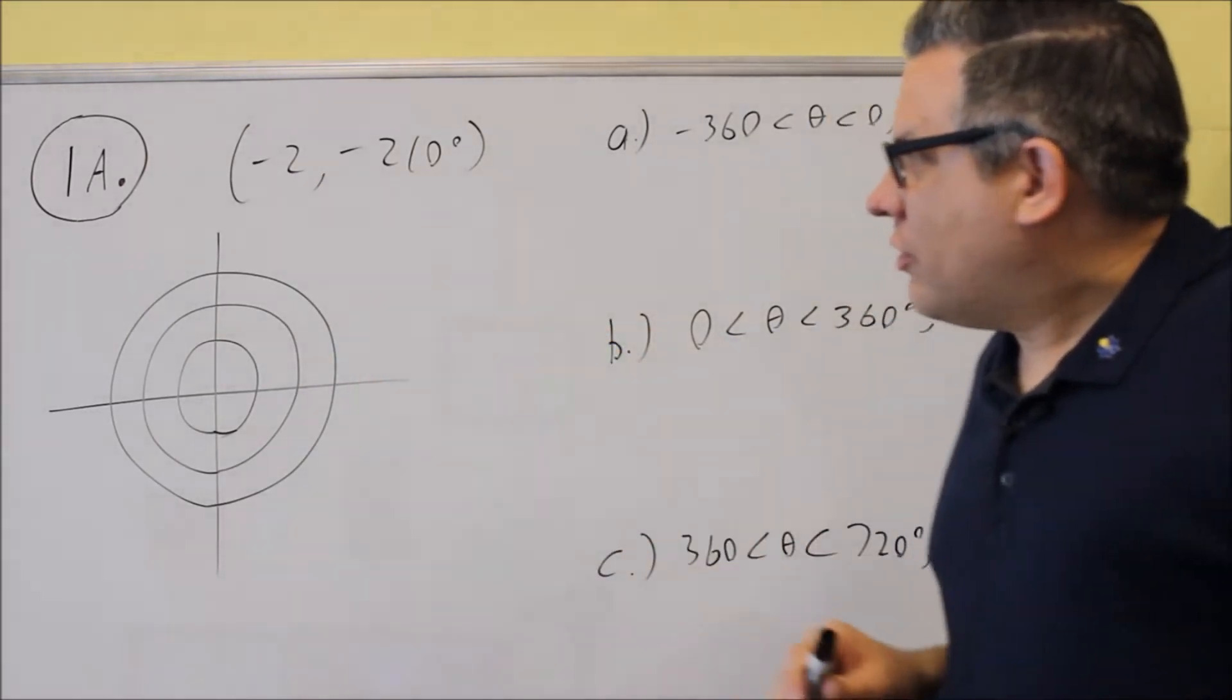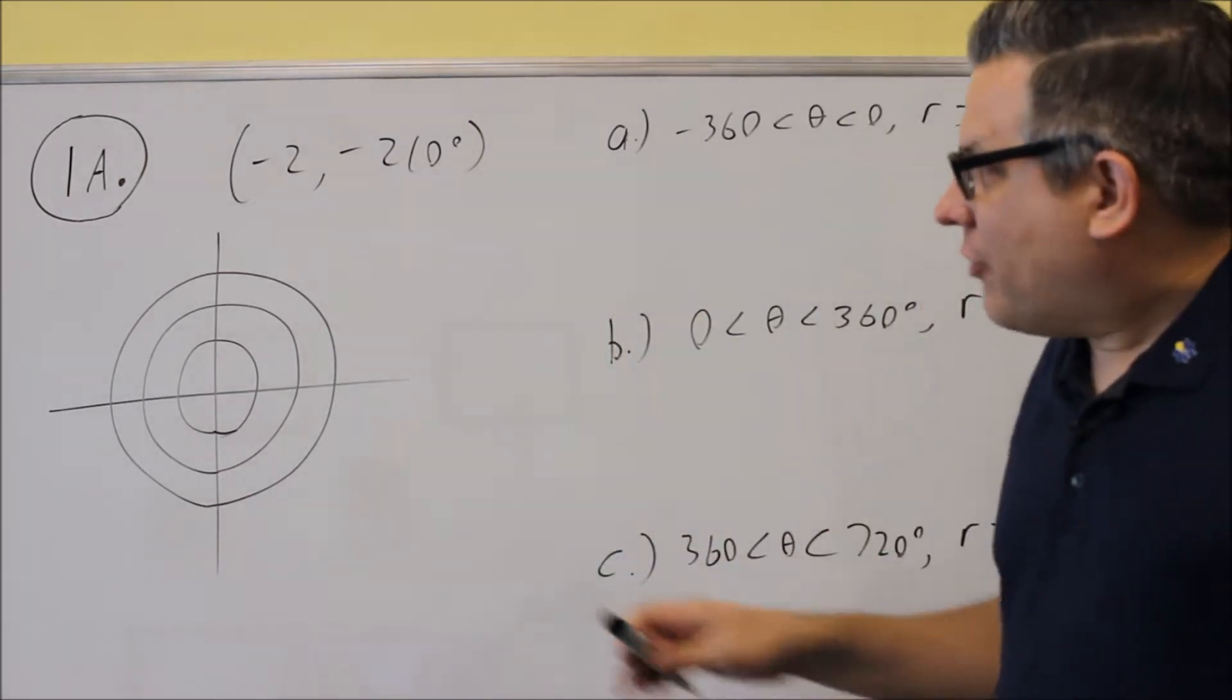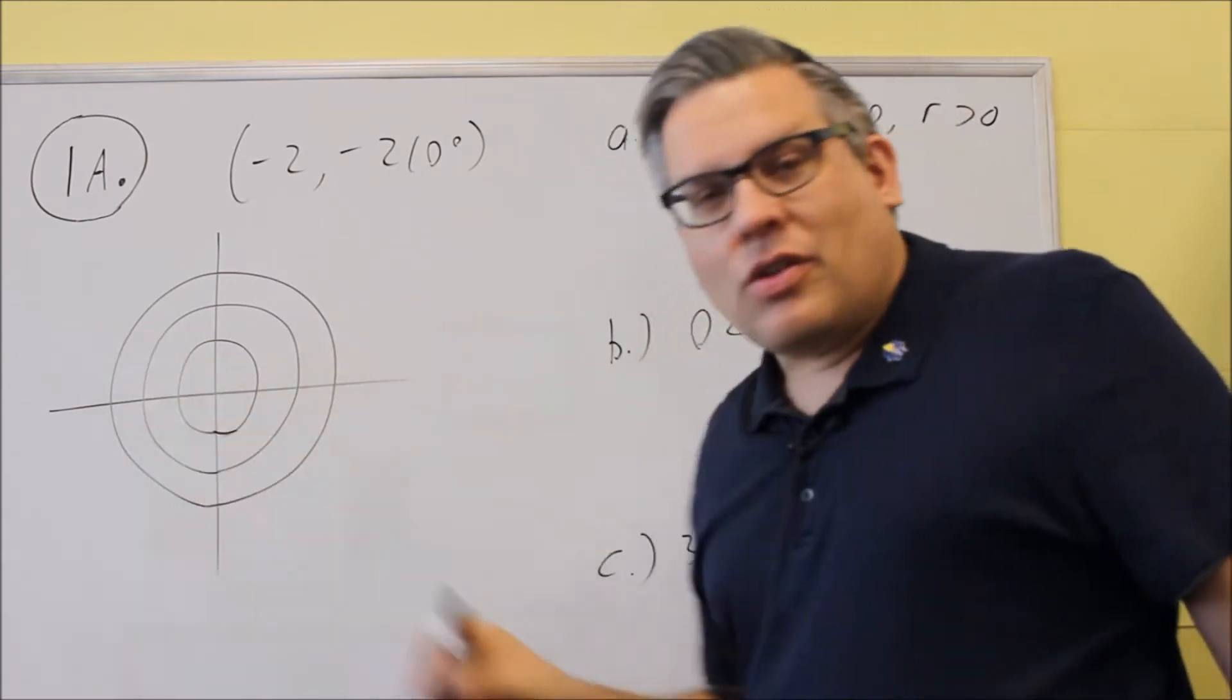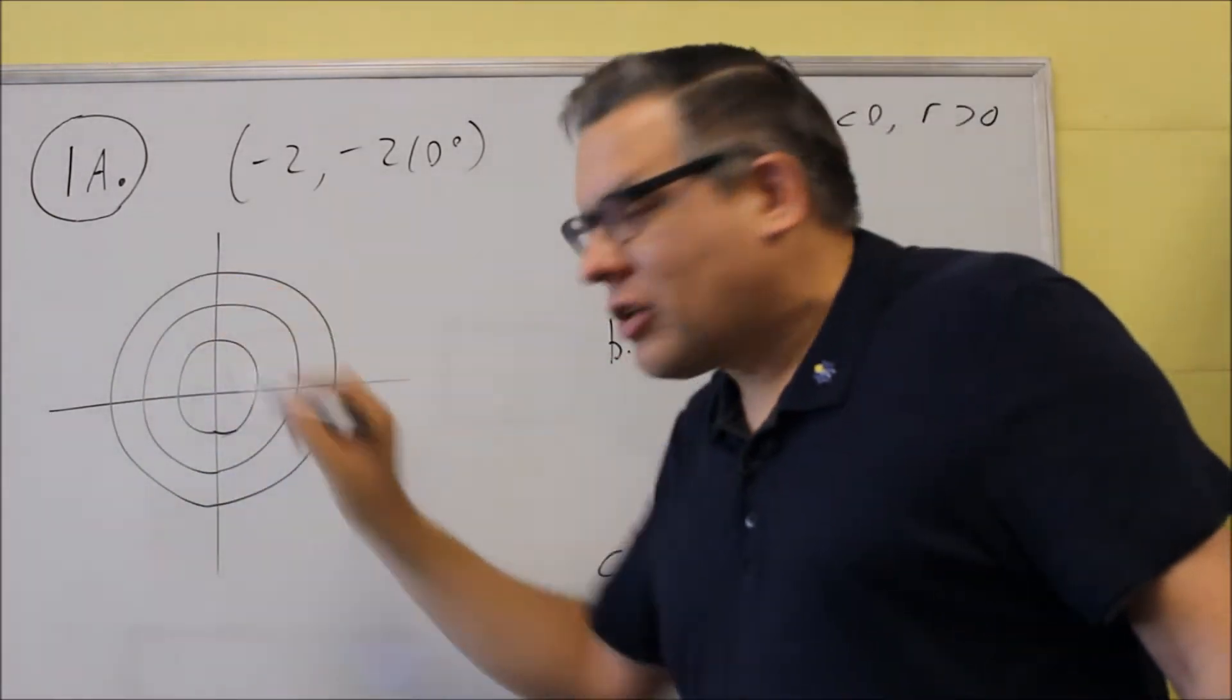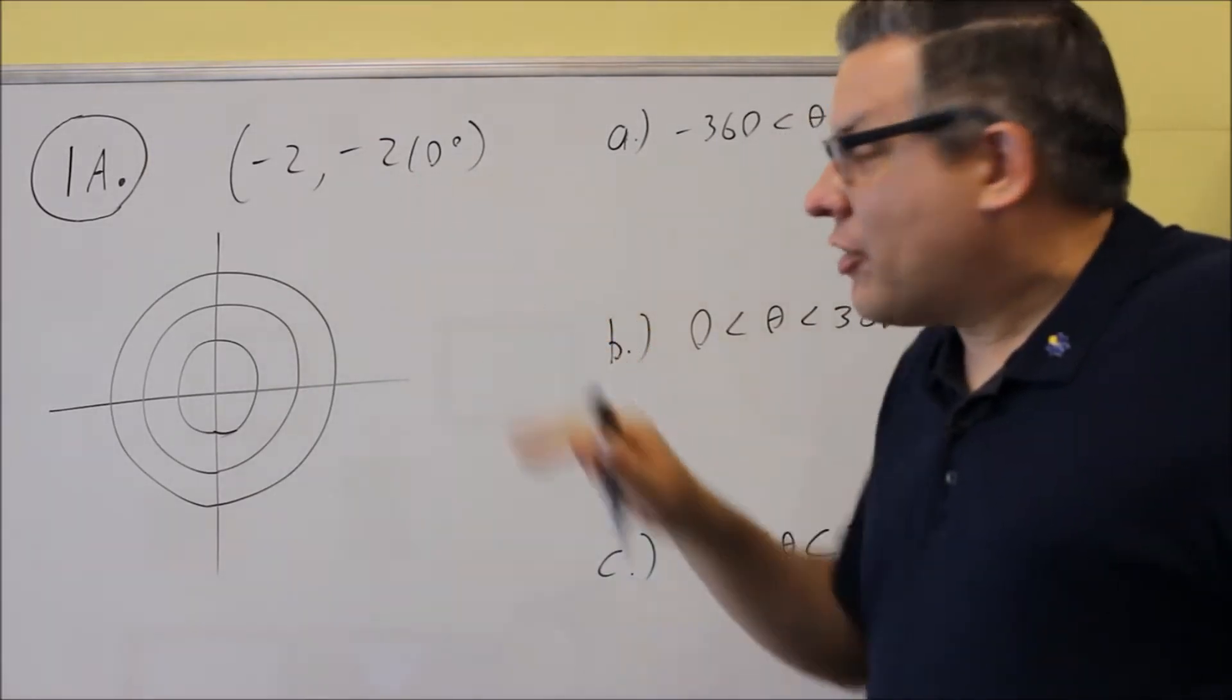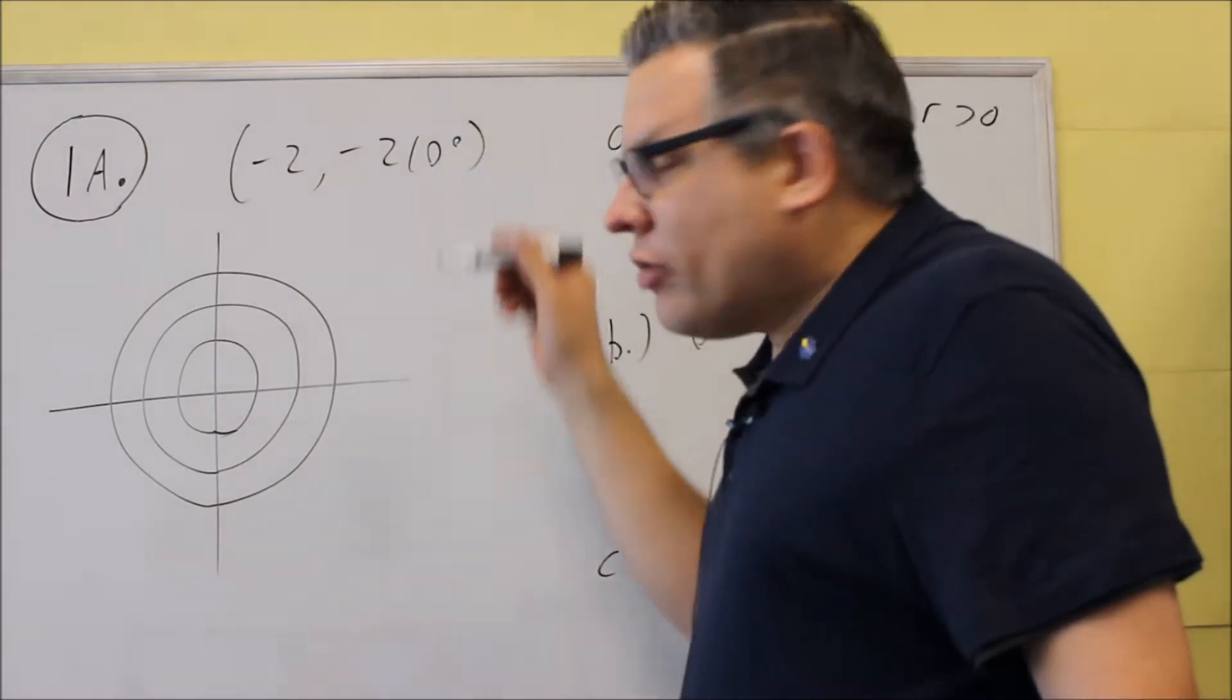So let's start with negative 2, negative 210. Let's plot that one. Now if you're going to be doing a negative angle, negative angles go around this way, so they go around clockwise. If you prefer to work with a positive angle, you could add 360 to that if you wanted to.